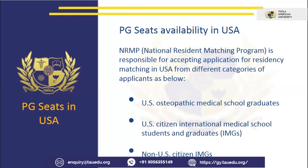As far as the US is concerned, the NRMP — National Residency Matching Program — is responsible for accepting applications for residency matching in the US from different categories: US allopathic medical school graduates, US osteopathic medical school graduates, US citizen international medical graduates, and non-US citizen international medical graduates like Indians. If you are a non-US citizen wanting to apply for PG seats in the US, you need to complete the MD program, clear USMLE Step 1, Step 2 CK and CS, get ECFMG certification, and then apply for residency matching. After completing your PG course of 3 to 7 years, you clear USMLE Step 3 and then get registered in the United States to practice.